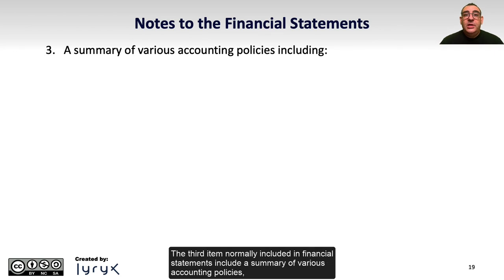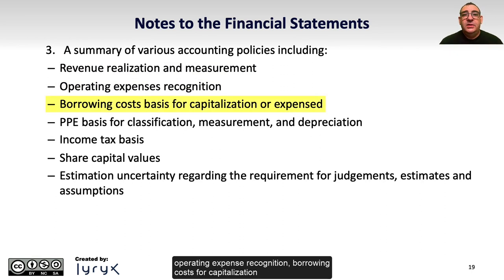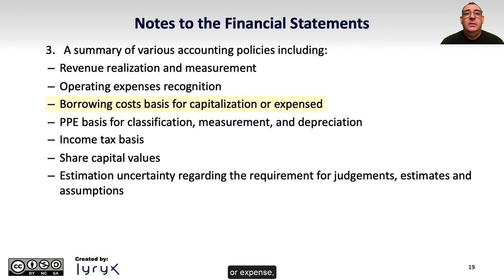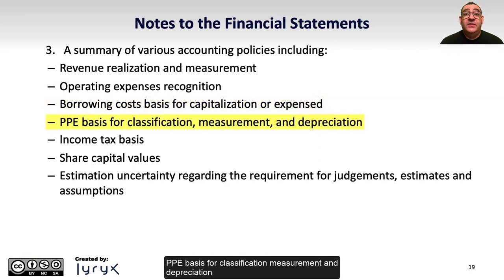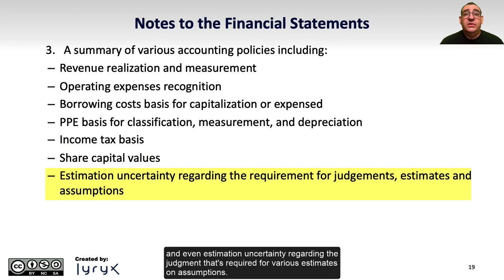The third item normally included in Financial Statements is a summary of various accounting policies such as revenue realization and measurement, operating expense recognition, borrowing costs for capitalization or expense, the PPE basis for classification, measurement and depreciation, the income tax basis, share capital values, and even estimation uncertainty regarding the judgment required for various estimates and assumptions.